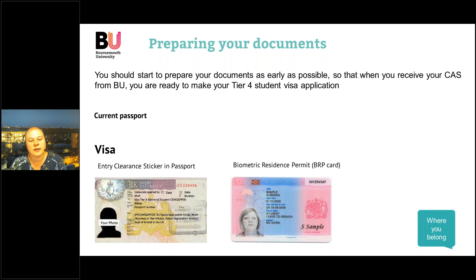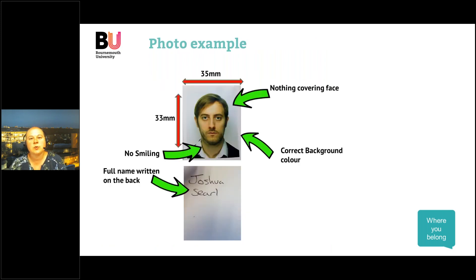You may have a visa which was an entry clearance sticker issued in your home country — that will be a sticker in your passport. If you had a visa granted whilst in the UK, you'll have a BRP, a biometric residence permit. If you have either of those, you need to submit them with your visa application. You also need to provide two passport size photographs.